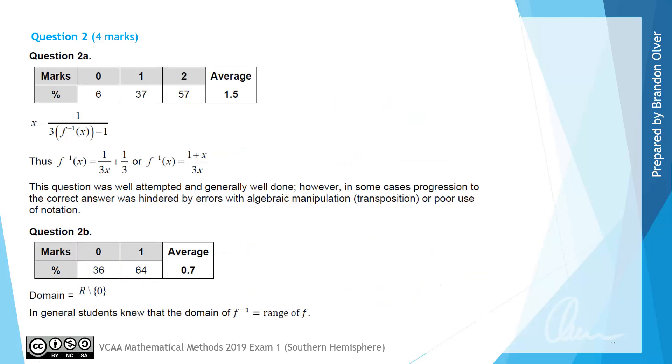From the examiner's report, 57% of students got full marks for this question, with 37% making a good start. The examiner says this question was well attempted and generally well done. However, in some cases progression was hindered by errors with algebraic manipulation.